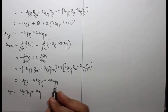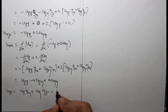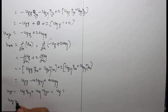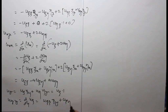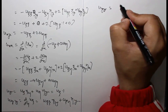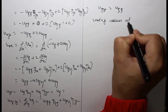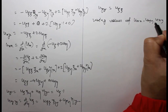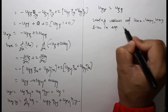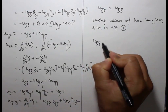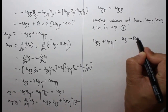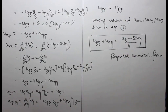Computing uy: uy equals uξ·ξy plus uη·ηy equals uξ·1 plus uη·0 equals uξ. And uyy equals uξξ. Using the values of uxx, uxy, uyy, and ux in equation 1, we get the canonical form: uηη equals (uξ minus 2uη)/4. This is the required canonical form.